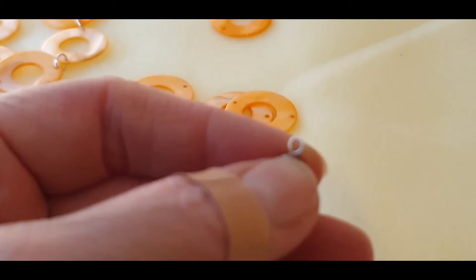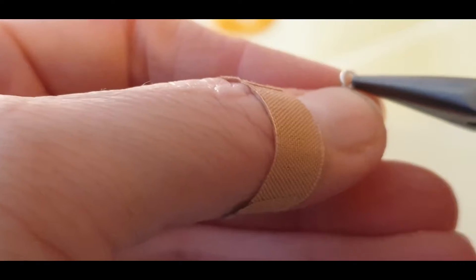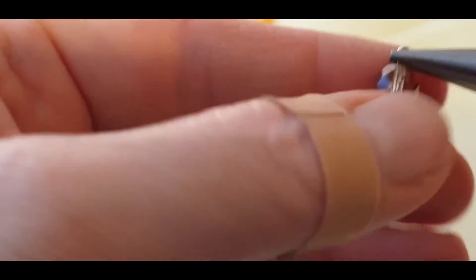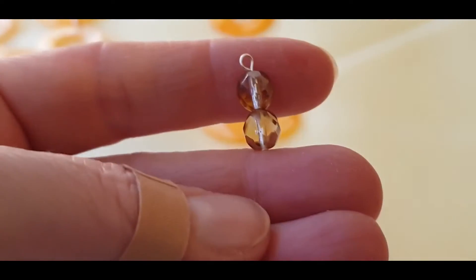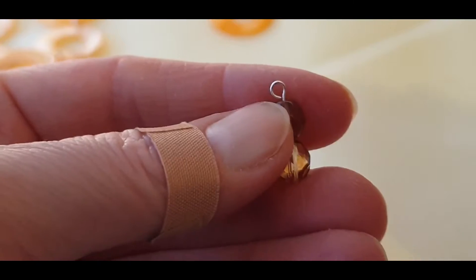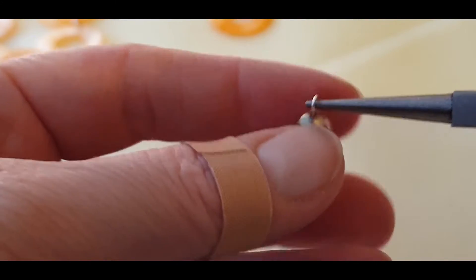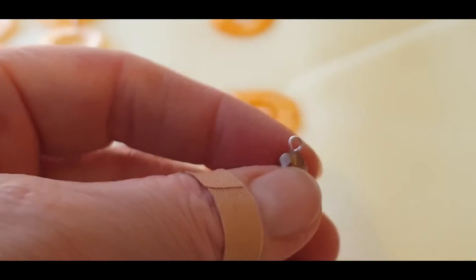You can use, I'd say chain nose or flat nose, just to sort of flatten that out a little bit, making sure you don't mark the metal too much. And there's a loop there. It's just an example to show you how to do it. So it can be a little bit difficult to begin with, but you will get used to it.